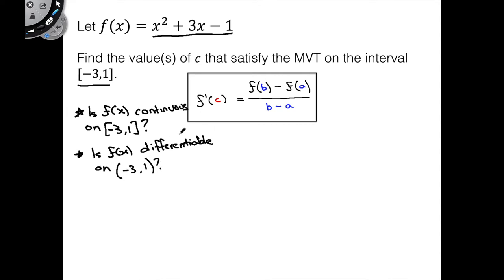We want to just check if these things are true, because if they're not, we might not necessarily have this value of c here. And well, f(x) is a polynomial. Polynomials are continuous and differentiable everywhere, so both of these are going to be true. It's always good to check, just to be sure. But in this case, they are, so we're good to go.